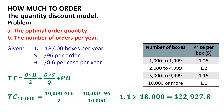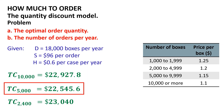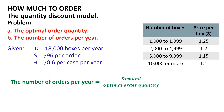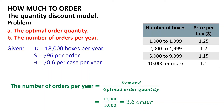Because 5,000 boxes per order yields the lowest total cost, ordering a quantity of 5,000 boxes is the overall optimal order quantity. To find the number of orders per year, simply divide the yearly demand by the optimal order quantity: 18,000 divided by 5,000 equals 3.6 orders per year.